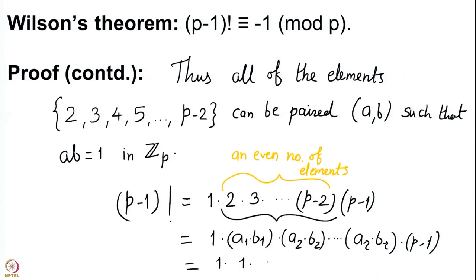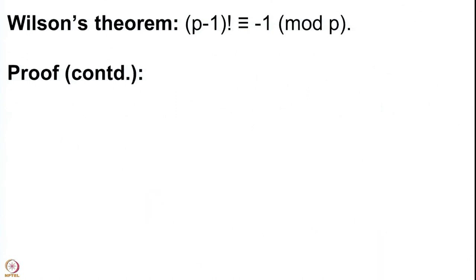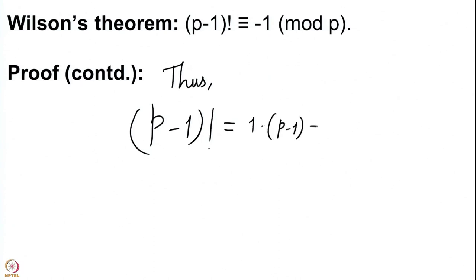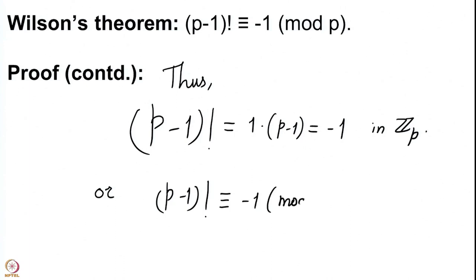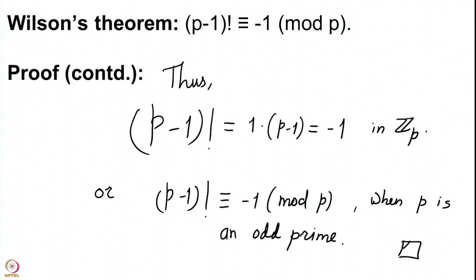All those pair products equal 1, and we are left with p−1. Thus (p−1)! = 1 × (p−1) = 1 × (−1) = −1 in Zp, that is, (p−1)! ≡ −1 mod p for any odd prime p. The proof is quite simple, but remember that the intricate analysis of x² ≡ 1 mod n was one of the major steps behind the simplicity of this proof.